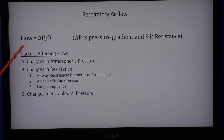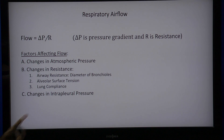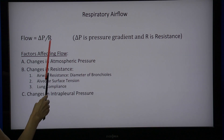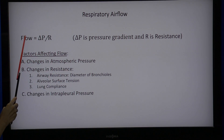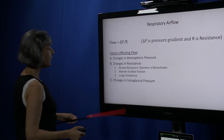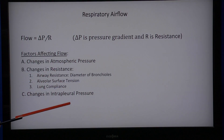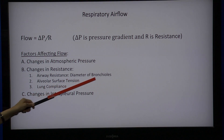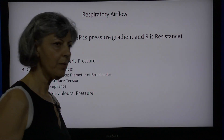We go back to the flow equation: flow equals delta P (the pressure gradient) divided by R (resistance). If we increase the resistance, flow will decrease. The factors that can change airflow include: changes in atmospheric pressure, changes in resistance — specifically airway diameter, alveolar surface tension, lung compliance — and briefly, intrapleural pressure.